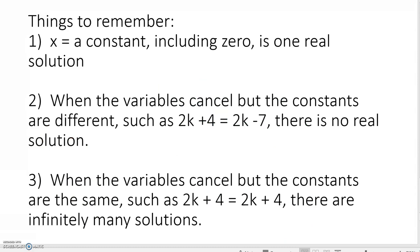The things we need to remember: X equals a constant, even if it's 0, is one real solution. When the variables cancel but the constants are different – such as 2K plus 4 equals 2K minus 7 – there's no real solution. Good luck on solving equations.